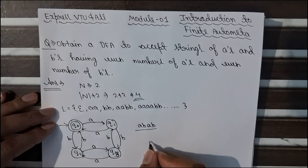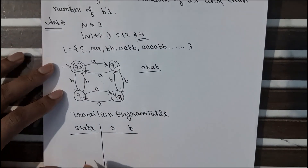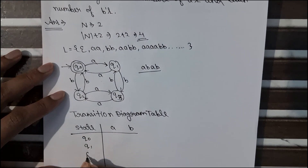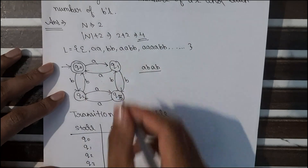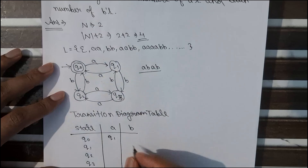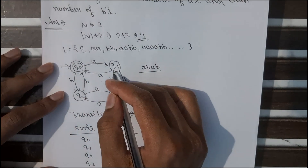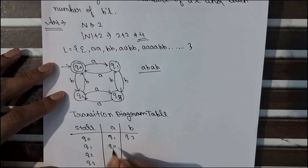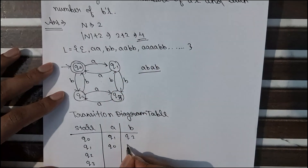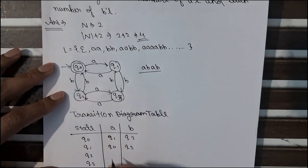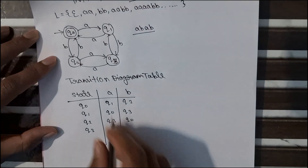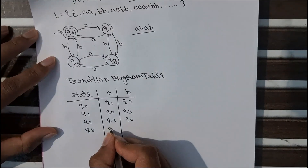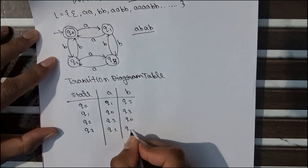Now we simply have to make the transition table. States Q0, Q1, Q2, Q3 with input symbols A and B: from Q0 with A it goes to Q1, with B it goes to Q2. From Q1 with A it goes to Q0, with B it goes to Q3. From Q2 with A it goes to Q3, with B it goes to Q0. From Q3 with A it goes to Q2, with B it goes to Q1. This is our transition table for this DFA.